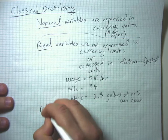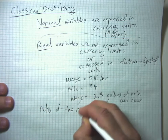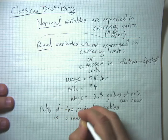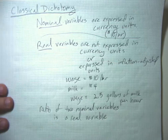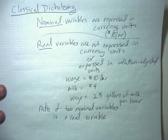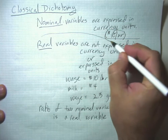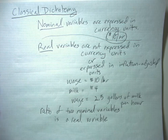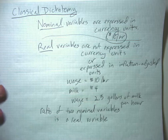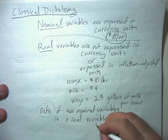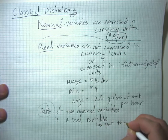The ratio of two nominal variables is a real variable. That might sound arcane, but it matters because when we put things in a ratio, we're putting them in context. If I tell you your wage is $10 an hour, that doesn't tell you that much. $10 an hour right now you might struggle to support a family, but $10 an hour 20 or 40 years ago would have been a really good wage. By putting things in a ratio, we compare them to something else and put them in context.